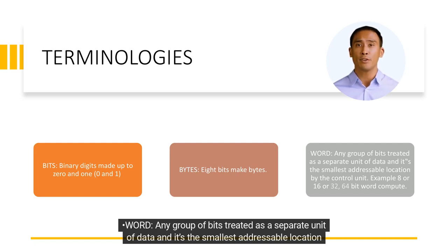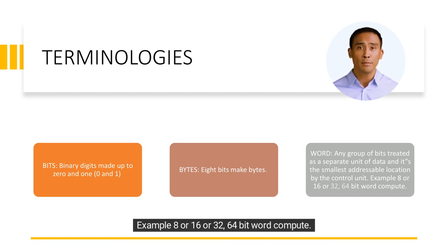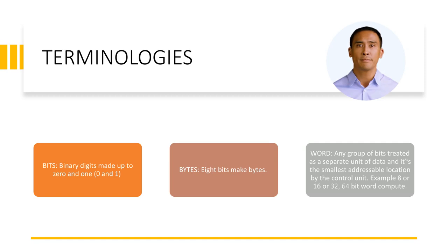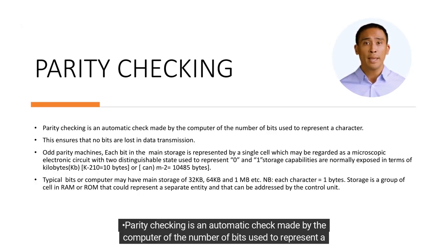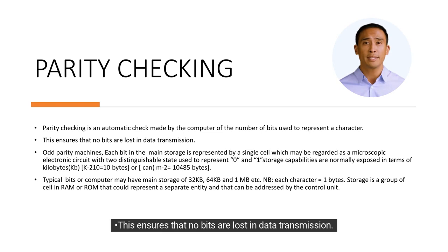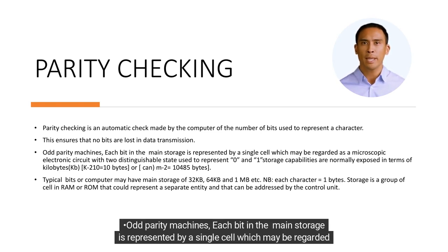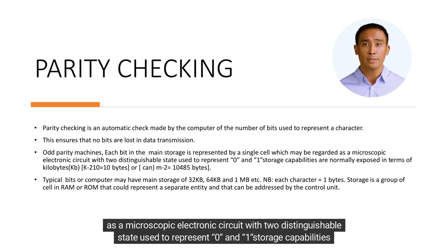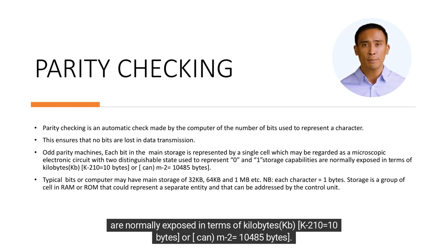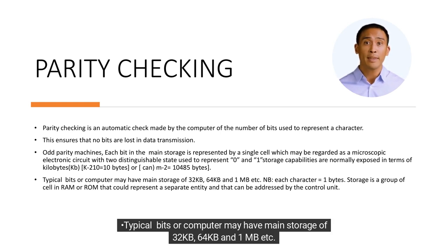Terminologies: any group of bits treated as a separate unit of data is the smallest addressable location by the control unit. Examples: 8-bit, 16-bit, 32-bit, or 64-bit word computers. Parity checking is an automatic check made by the computer of the number of bits used to represent a character, ensuring no bits are lost in data transmission. Storage capabilities are normally expressed in terms of kilobytes (KB = 1,024 bytes) or megabytes (MB = 1,048,576 bytes). A typical computer may have main storage of 32 kilobytes, 64 kilobytes, or 1 megabyte. Note: each character equals 1 byte.